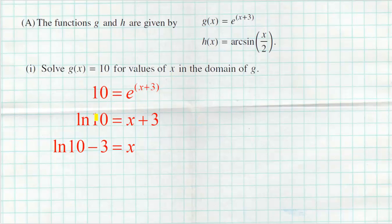There's only one more step, and that is to subtract three from both sides. Please do not do 10 minus three and say seven — that is not a 10, it's a natural log of 10. It might be better to keep natural log of 10 in its own parentheses and then subtract three. We're not allowed to use a calculator on this problem, so we leave our exact answer as natural log of 10 minus three.